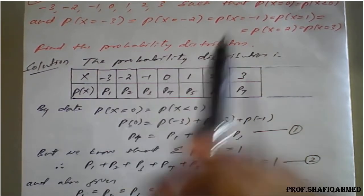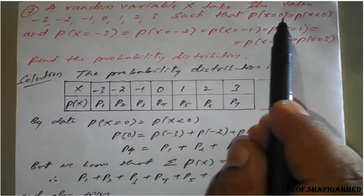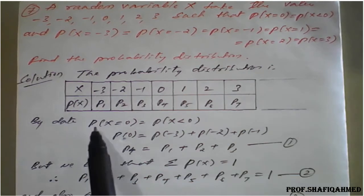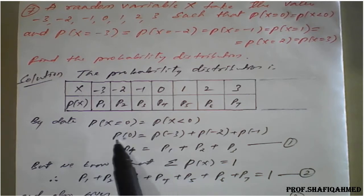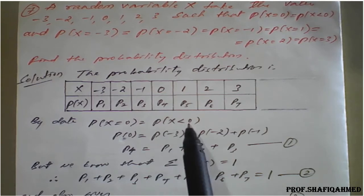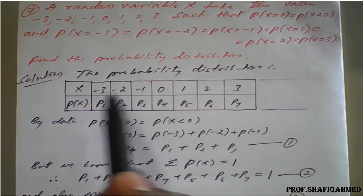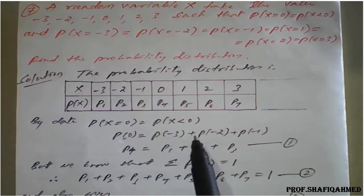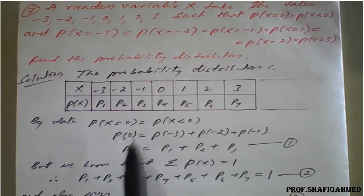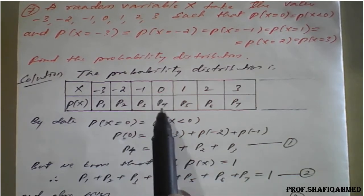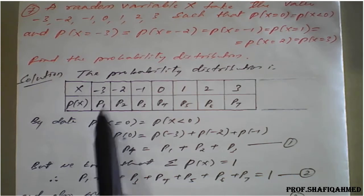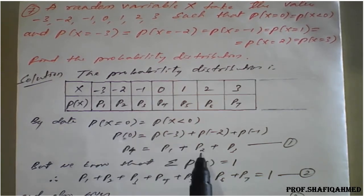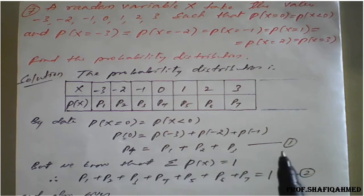By the first condition given in the data, P of X equals 0 is equal to P of X less than 0. P of X equals 0 means P4, and P of X less than 0 means all values less than zero, which are minus 3, minus 2, minus 1 — so P of minus 3 plus P of minus 2 plus P of minus 1, that is P1 plus P2 plus P3. So P4 equals P1 plus P2 plus P3. Call this equation number 1.